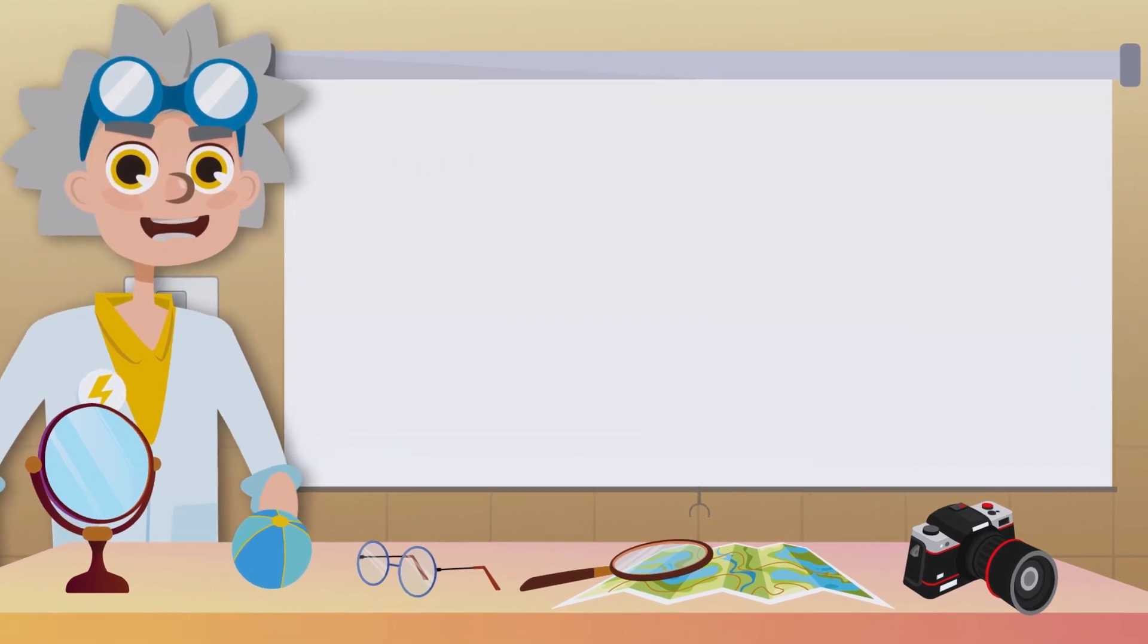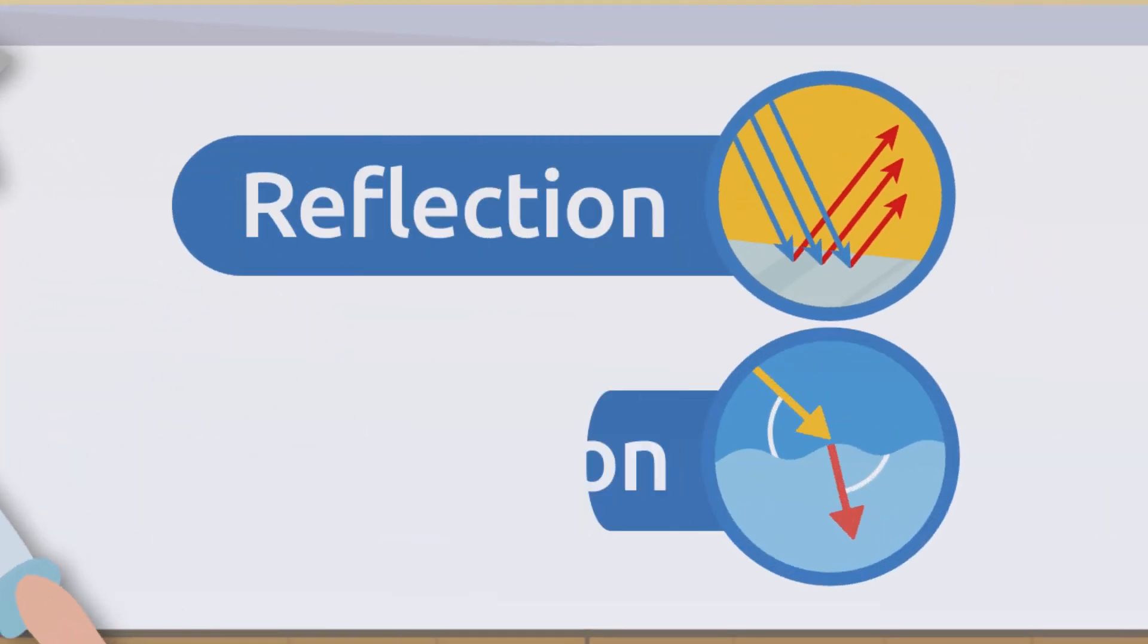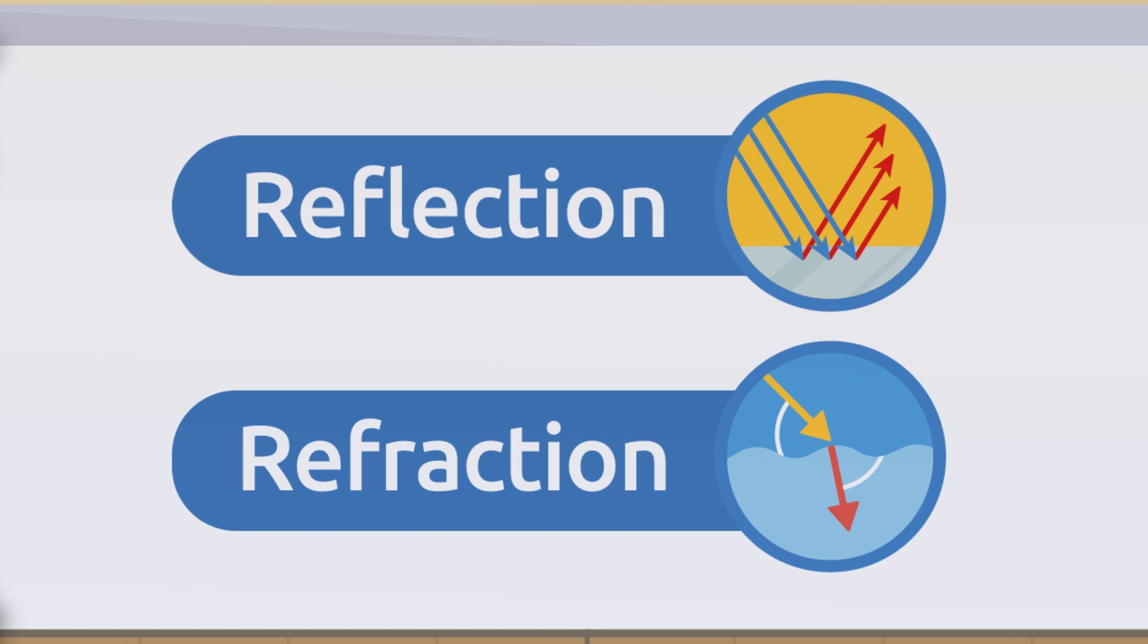Let's start by talking about the main properties of light, which are reflection and refraction.